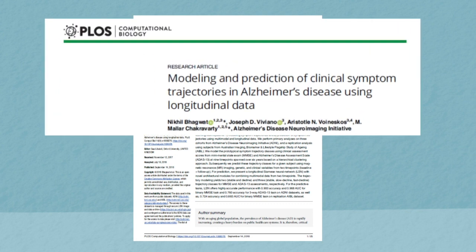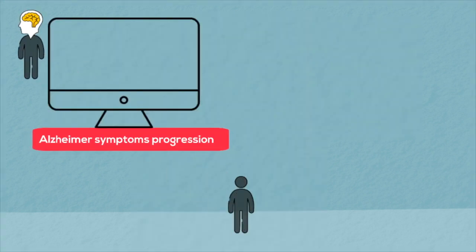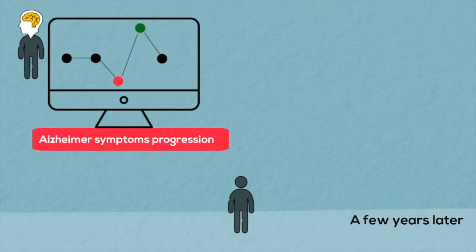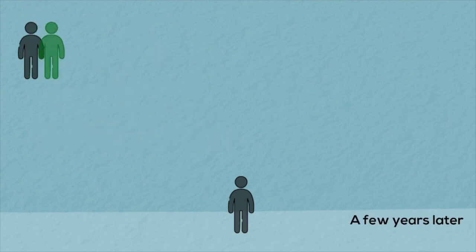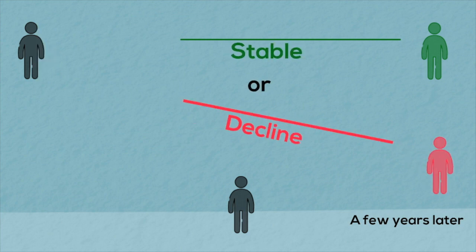The goal of this work, in theory, is quite straightforward. We want to identify individuals at risk of Alzheimer's and predict their symptom progression over the next few years. As shown in this diagram, we want to know who will remain stable and who will decline within the next five to six years.